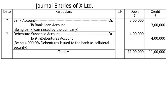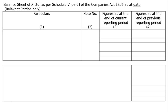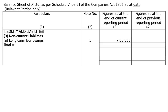Next is the balance sheet of AX Limited as per Schedule 6, Part 1 of the Companies Act 1956, as at date — relevant portion only. Draw the balance sheet format. Part 1: Equity and liabilities, third part — non-current liabilities, under this (A) long-term borrowings, Note 1: Rs.7 lakhs. No totalling will be done as all information is not available — relevant portion only.